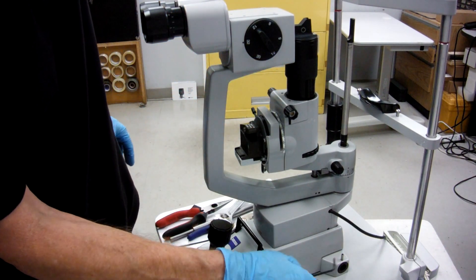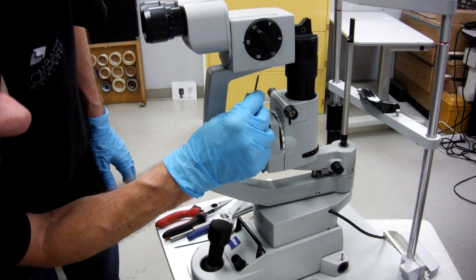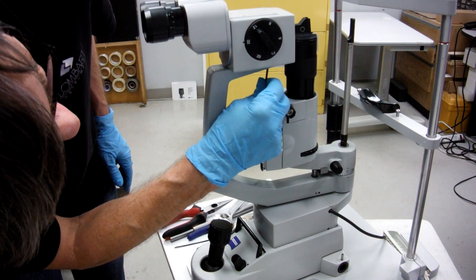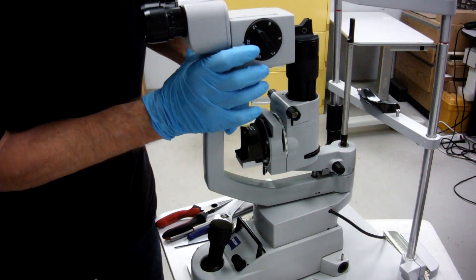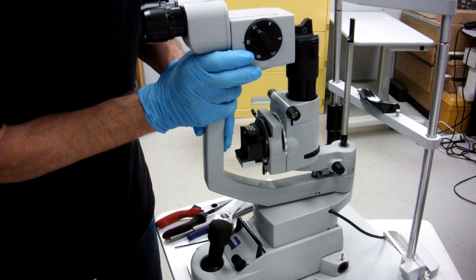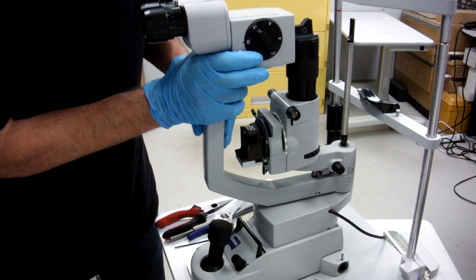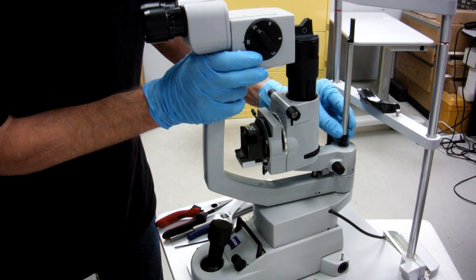And to be able to do that, there's two allens under here, one on each side. Just loosen them a little bit and then you can pull your head back and forth to get it nice and sharp to get your focus.